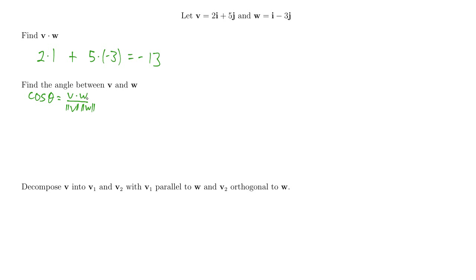I need to compute three values. I already have v dot w, so now I just need to find the magnitude of v and the magnitude of w. The magnitude of v is the square root of the first component squared — that's 4 — plus the second component squared — that's 25 — giving us the square root of 29.